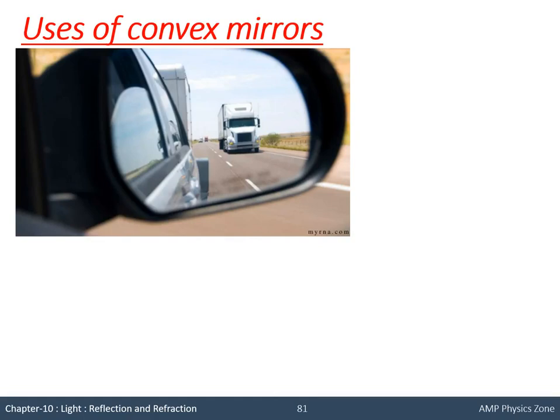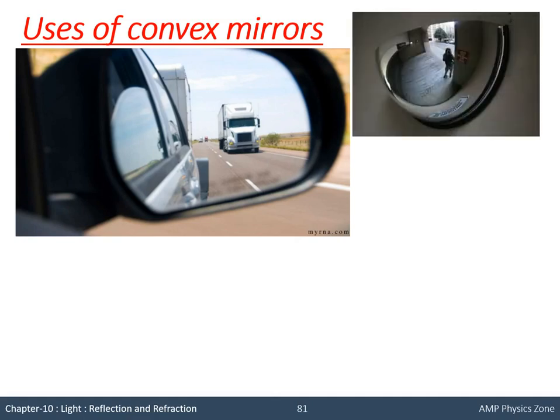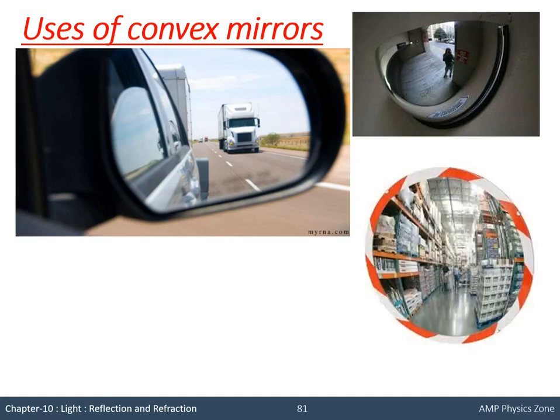The first use is as a rear-view mirror. It is used as a rear-view mirror because it has a larger field of view. Field of view means the area covered by the mirror — how much area can be seen in this mirror. Since a convex mirror is bulgy, more area can be seen in it, so it is used as a rear-view mirror. It can also be used in parking slots to check if anything is coming, and in malls for security purposes so that everything can be viewed.